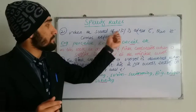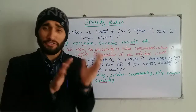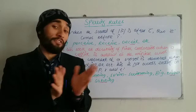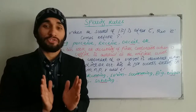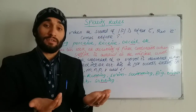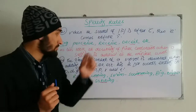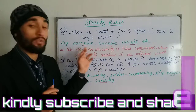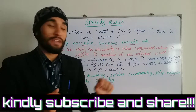Rule twenty-one: when the sound of E is after C, then E-I is used — A comes before E. This is somehow contrary to rule twenty, where we were using I before E before the long E sound. However, here, after C with the long E sound, we use E before I. Examples: perceive — after C, we have the sound of long E, so we use E before I. Receive. Deceit.